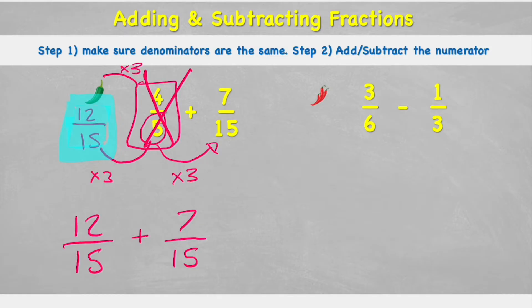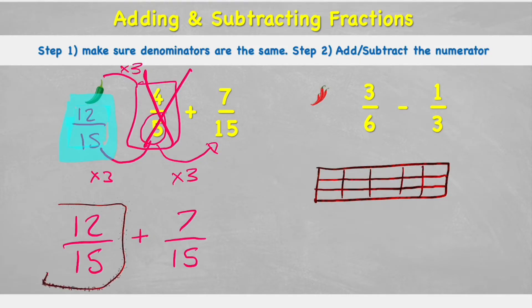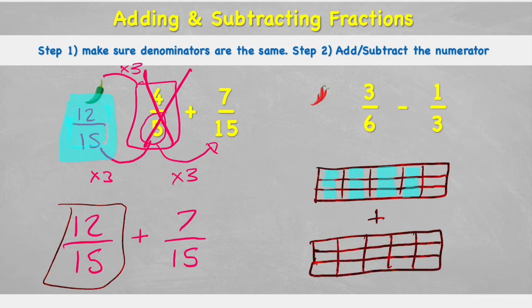So now my question says 12 fifteenths added to 7 fifteenths. And now I can do this. Let's see it using pictures. So if I draw a chocolate bar and I split it into 15, and the first fraction is 12 fifteenths, so it means I have 12 of these pieces. And I'm adding that to another chocolate bar also that's now split into 15, but this time I only have seven of them.